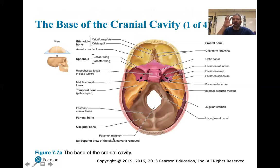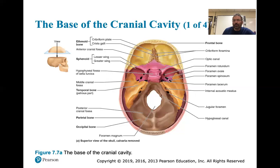Looking at a superior-to-inferior view: there's the cribriform foramen, optic canal, foramen ovale, foramen spinosum. The internal acoustic meatus is associated with the ear - think which cranial nerve innervates the ear and look it up. The hypoglossal canal is for cranial nerve twelve, which innervates your tongue muscles.